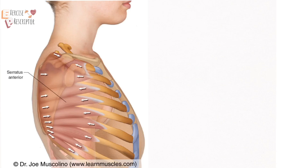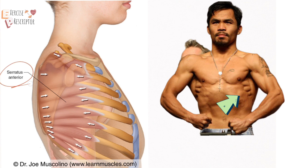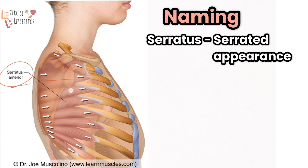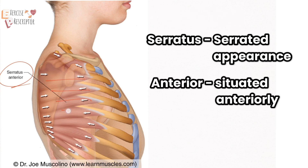Welcome to the scientific series of muscle. Today we are going to learn about serratus anterior. We will start with naming — why is this muscle called serratus anterior? Because it has a serrated appearance. There is one more muscle with a similar serrated appearance behind it, called serratus posterior. This muscle is situated in front of that muscle, so it is called serratus anterior.